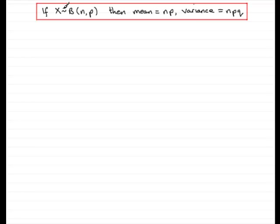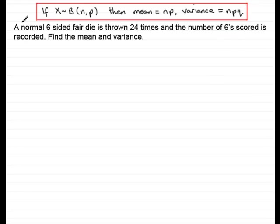So what I've done here is just recap that if X follows a binomial distribution, B(n,p), then the mean is always np and the variance is npq. Remember q is always 1 minus p. So in the first example, we've got here a normal six-sided fair die is thrown 24 times, and the number of sixes scored is recorded. Find the mean and the variance.